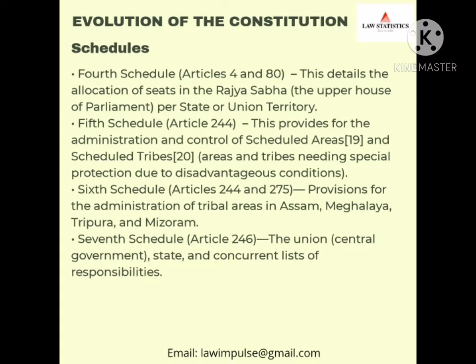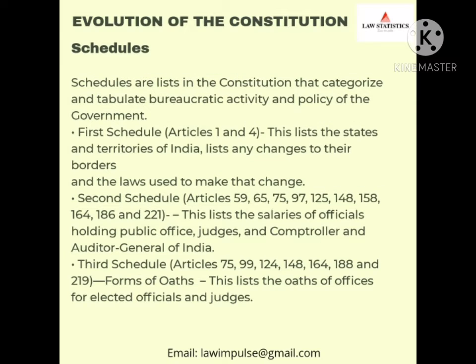The 4th Schedule talks about the details of allocation of seats in the Rajya Sabha per state. The 5th Schedule covers Article 244. The 6th Schedule covers Articles 244 and 275. The most important schedule is the 7th Schedule, Article 246, which talks about the union, state, and concurrent list responsibilities. Schedules are listed in the constitution that categorize and tabulate bureaucratic activity and policy of the government.